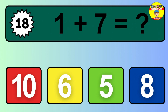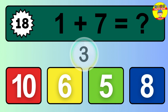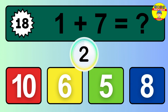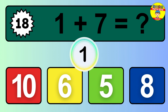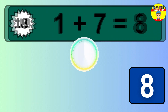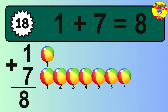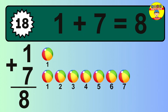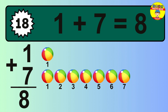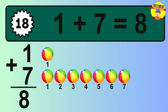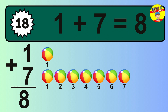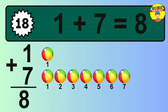Question 18. 1 plus 7 equals what? So the answer is 1 plus 7 is 8. Let's count it: 1, 2, 3, 4, 5, 6, 7, 8.